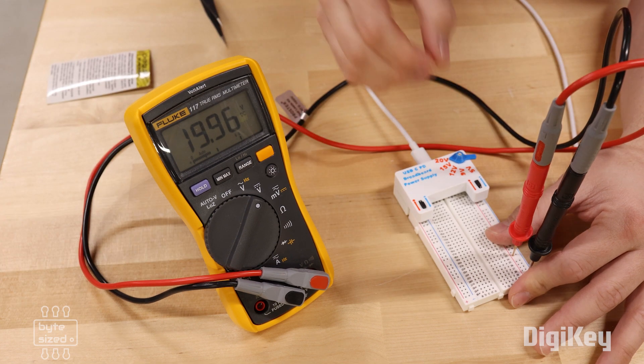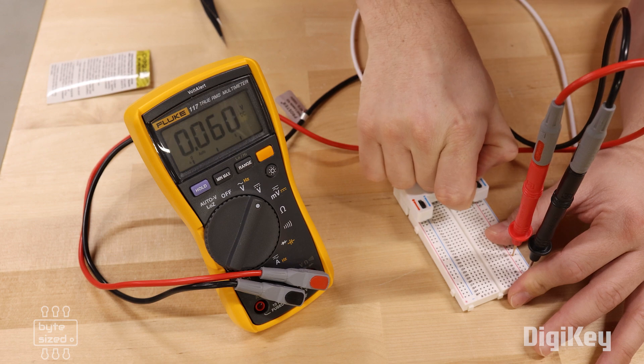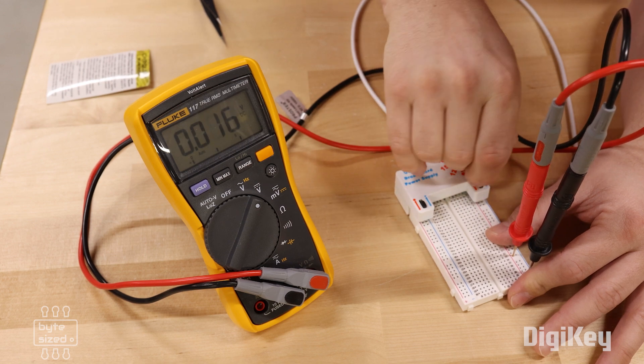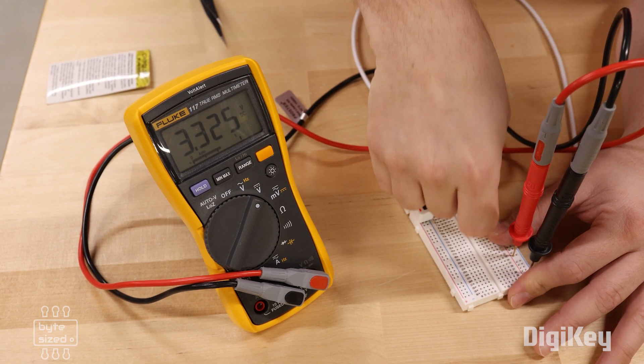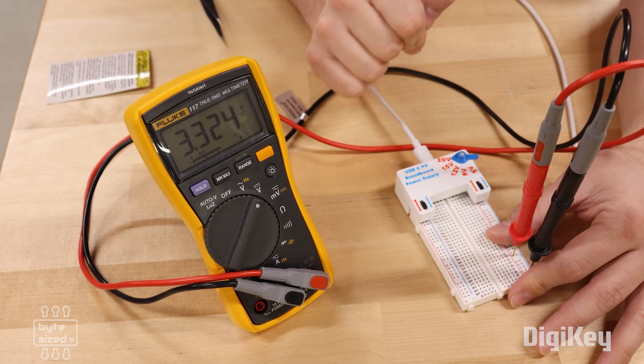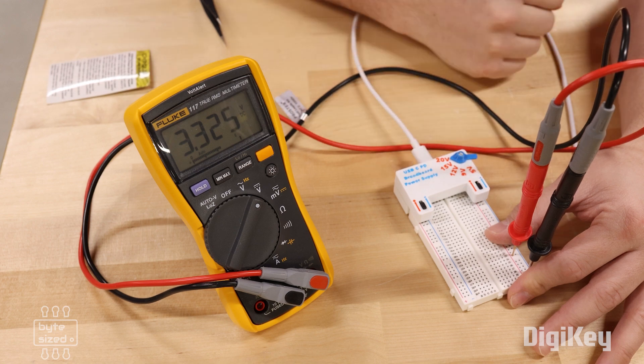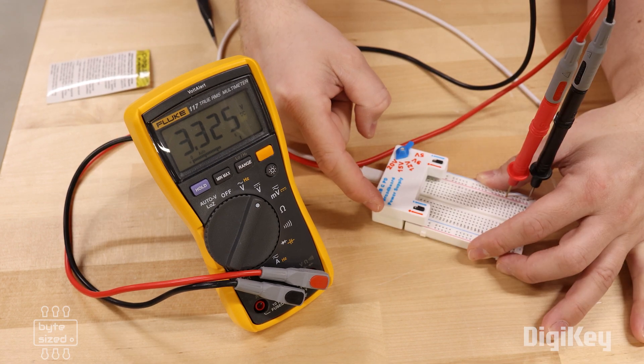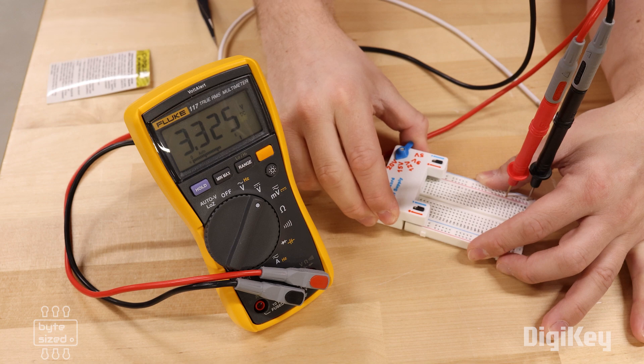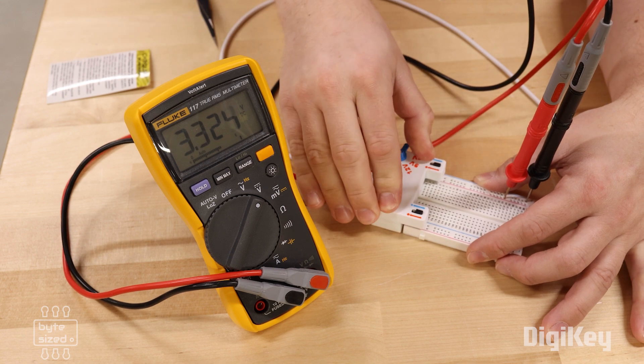Then if I want 3.3 volts, all I have to do is change the selection resistor here, and I get 3.3 volts on the output. Both of these rails work independently, so I can have either VUSB on the rail, or I can have 3.3 volts. And as you can see, I've solved the problem that I was having before of the power supply coming out. This thing is really solid, and it doesn't wiggle out.